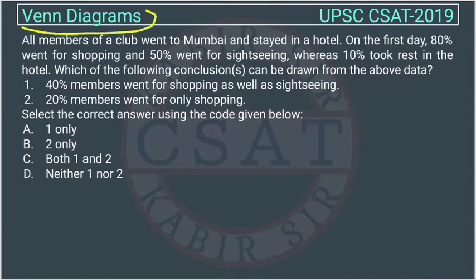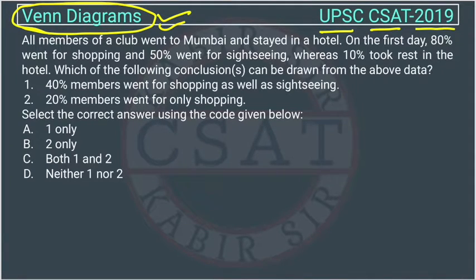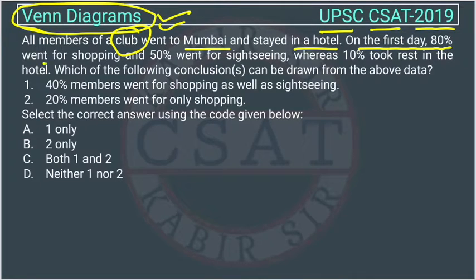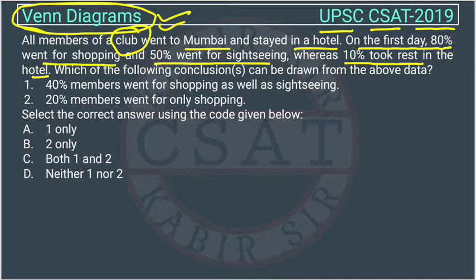This is a question of reasoning taken from the unit Venn diagram, asked by UPSC in the CSAT paper of 2019. All members of a club went to Mumbai and stayed in a hotel. On the first day, 80% went for shopping and 50% went for sightseeing, whereas 10% took rest in the hotel. Which one of the following conclusions can be drawn from the above data?